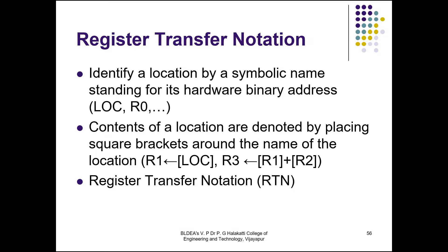We identify a memory location by a symbolic name, usually in uppercase alphabets — for example, LOC, NUM, R0, TABLE, etc. The contents of a location are denoted by placing square brackets around the name. The right-hand side of an RTN expression always denotes a value, and the left-hand side is the symbolic name where the value is to be stored.